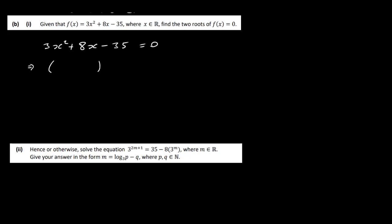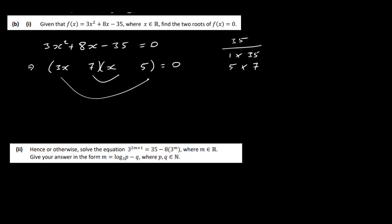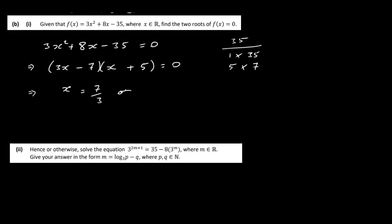Looking at 3x², that's 3x times x. For 35, the factor pair 5 × 7 works. Putting 5 and 7 in: 3x × 7 gives 21x... wait — that gives 7 and 15. We can get 8 from 15 − 7 = 8. Since we need −35, we put plus on the 15 term and minus on the 7 term. So we get (3x − 7)(x + 5) = 0, giving x = 7/3 or x = −5.